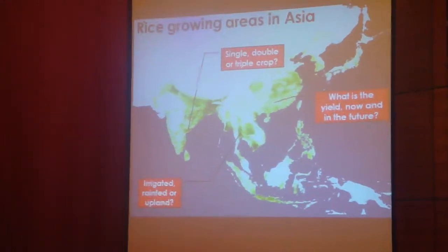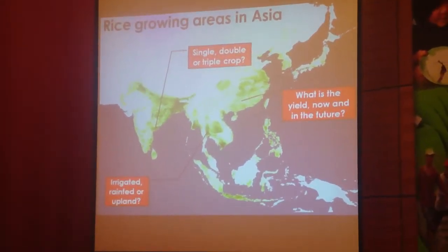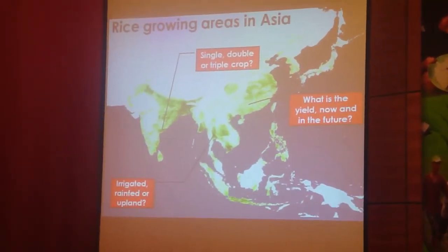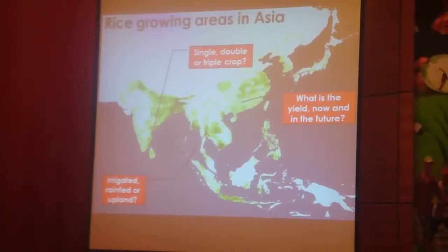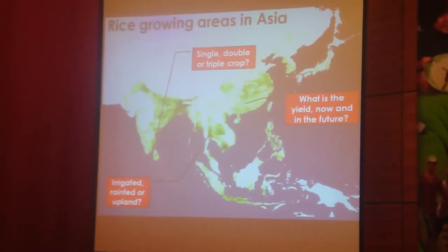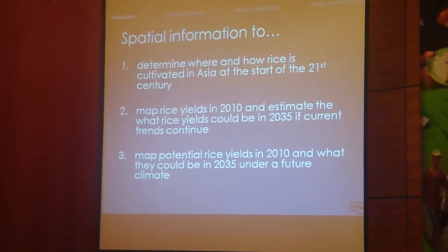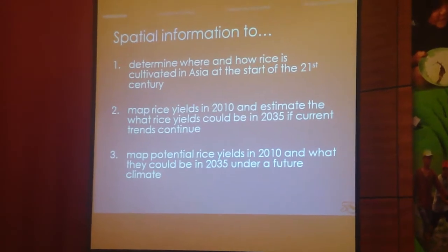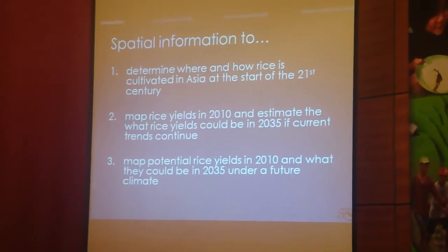This is the question that was posed by David. I joined ERI this time last year and this was one of the first tasks I was faced with. If we look at the rice growing areas across Asia, what do we know about the cropping systems, about irrigation and rain fed? What do we think we know about the yields and what those yields may be in the future? These are all questions that needed to be answered as a background analysis. I split this into three separate tasks: determining where and how rice is cultivated in Asia, trying to get an idea of the actual yields now and what they may look like in the future, and then looking at rice potential yields under climate change.